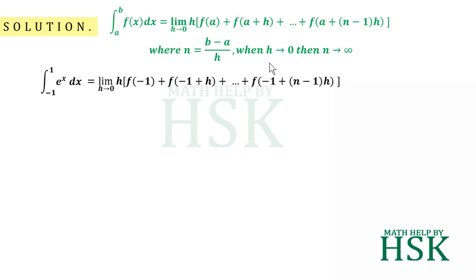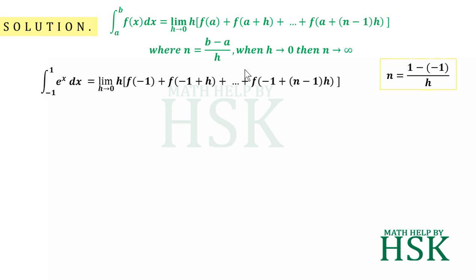To calculate this expression, I have n is equal to upper limit minus lower limit, that is 1 minus minus 1. So I get n is equal to 2 upon h, or n h is equal to 2.